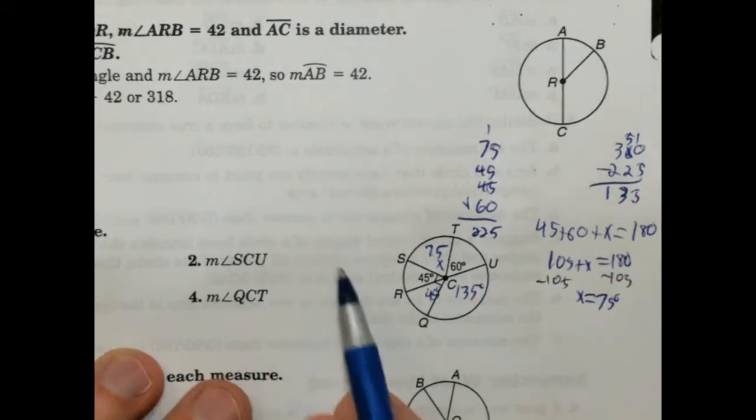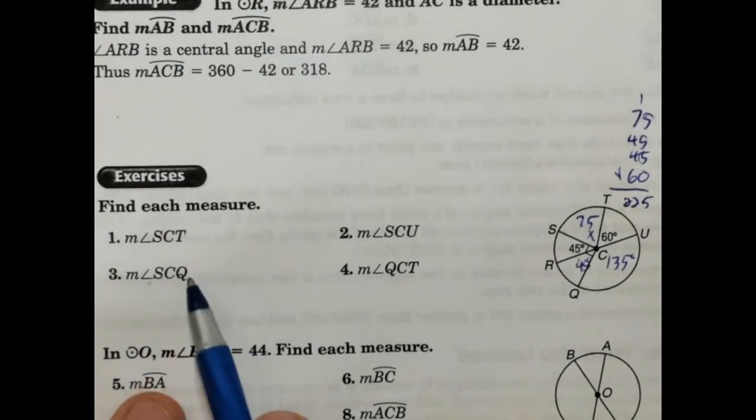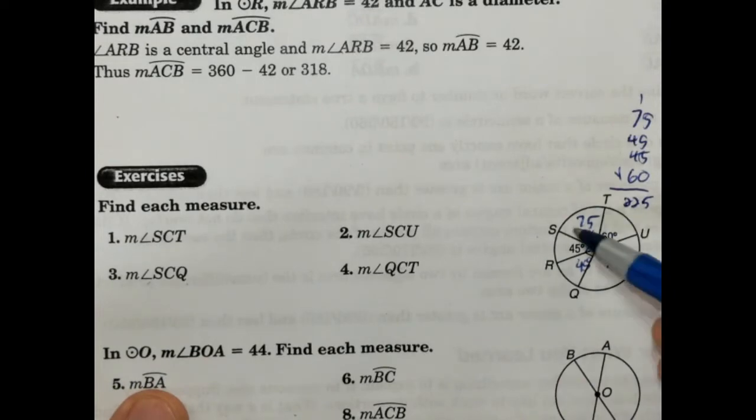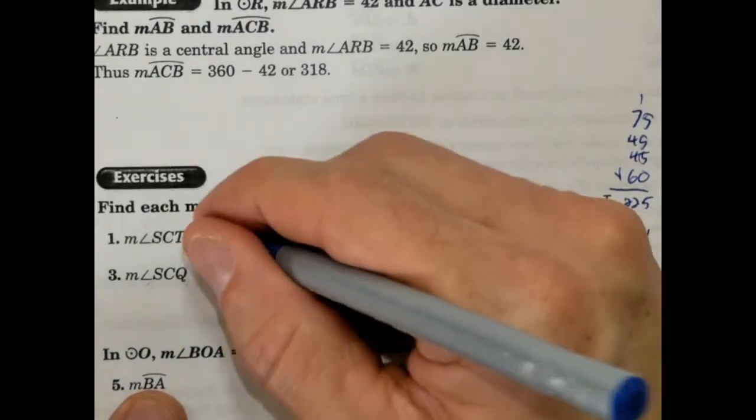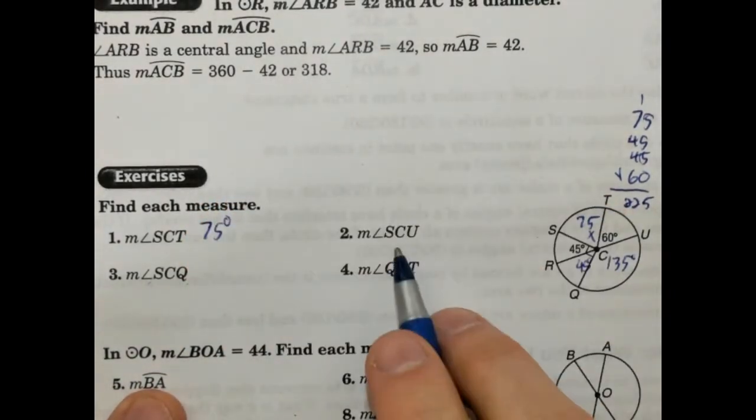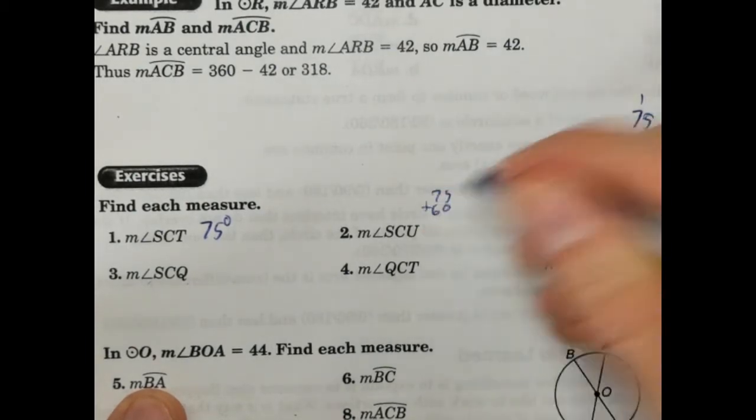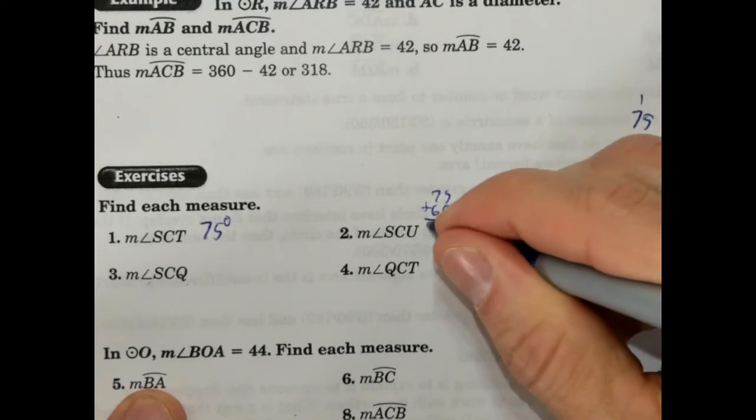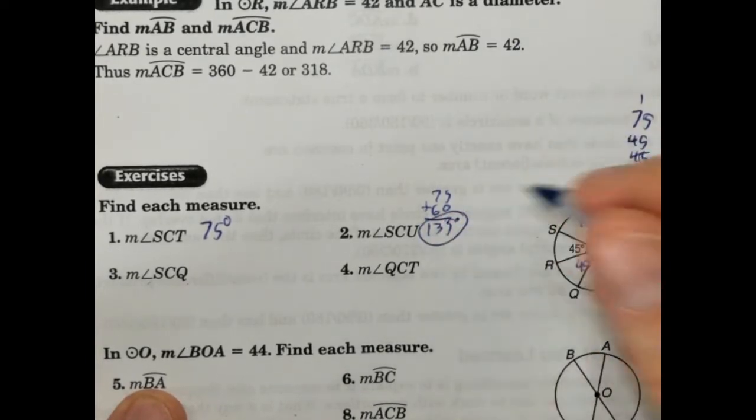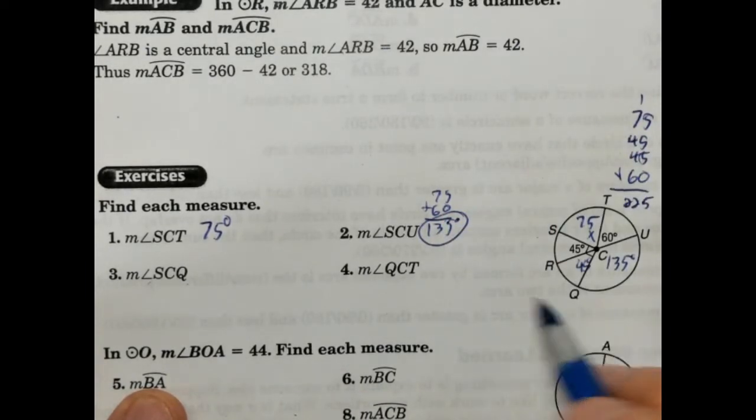Now, knowing all that, we can then go ahead and plug these in. So SCT is from this one here. So that's going to be 75 degrees. SCU is going to be this one here. So to add those together, 75 plus 60, and that's going to be 135 degrees.